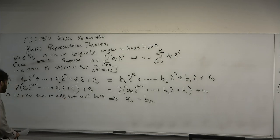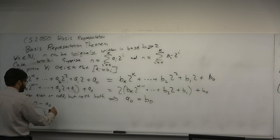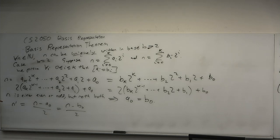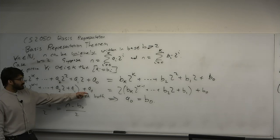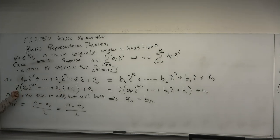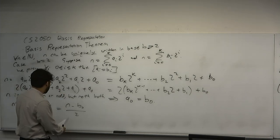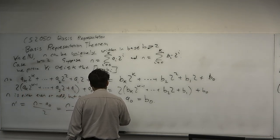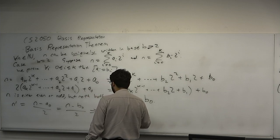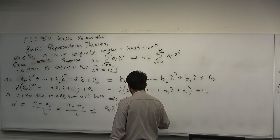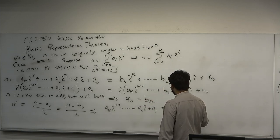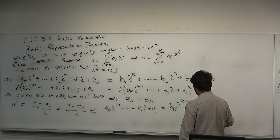Now, since a_0 equals b_0, consider n prime to be equal to n minus a_0 over 2. And since a_0 equals b_0, this is n minus b_0 over 2. Right? What is n minus a_0 over 2? It's going to be a_0, you're going to minus that, and then you're going to divide by 2, this power of 2. So this is just going to be, since these two are equal, that's going to imply that a_k times 2 to the k minus 1, plus a_2 times 2 plus a_1, is equal to b_k times 2 to the k minus 1, plus b_2 times 2, plus b_1. Right?